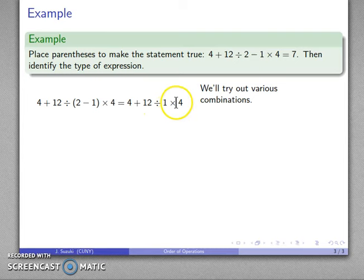And here I have multiplication and division. They have equal precedents, so I'm going to work these from left to right. I do divide by 1, then times 4. Divide by 1, times 4. Finally, I add, and still not what I want.